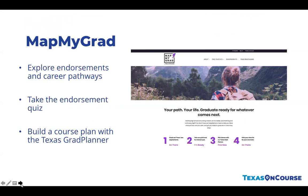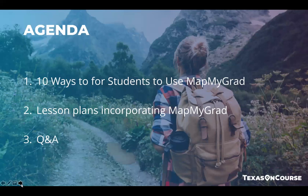MatMyGrad's Texas Grad Planner suggests the classes students can take to get to where they want to go after high school, allowing them to develop a high school course plan based on their career pathways and endorsements offered at their selected high school. Today's agenda includes covering 10 activities for students to complete on MatMyGrad, setting up a student account, walking through the Texas Grad Planner, a related student worksheet, TEKS-aligned lesson plans from our new curriculum guide, and a Q&A at the end.